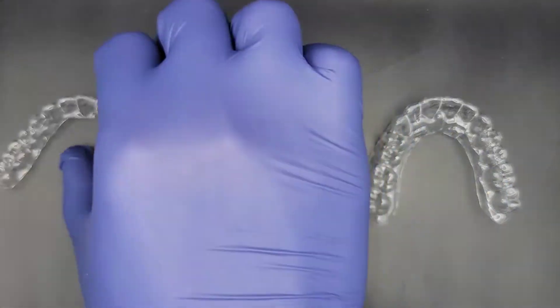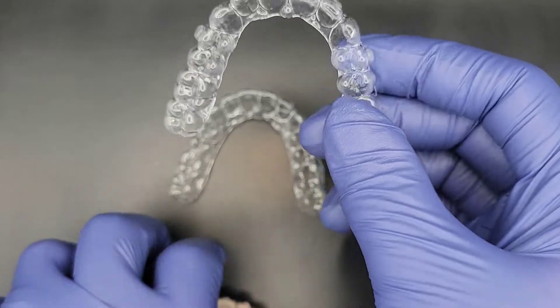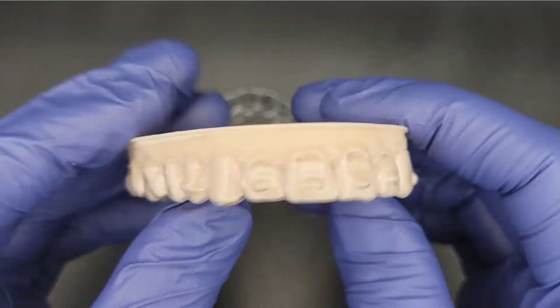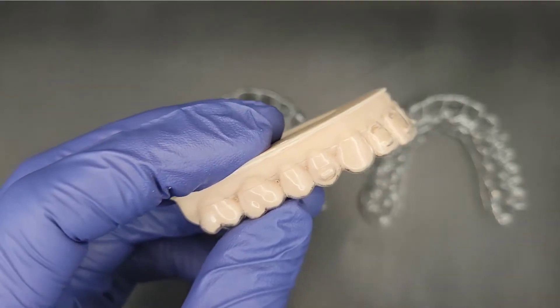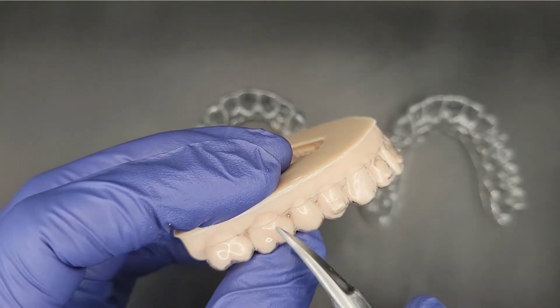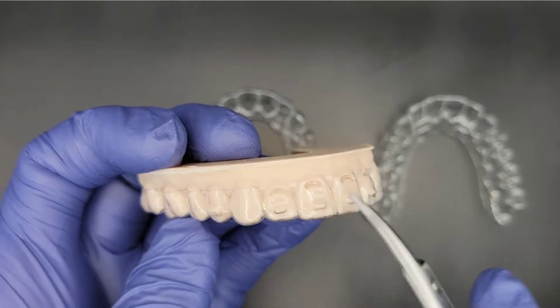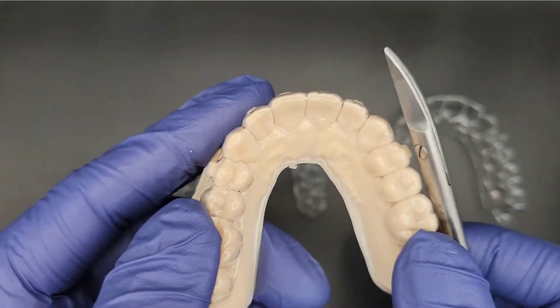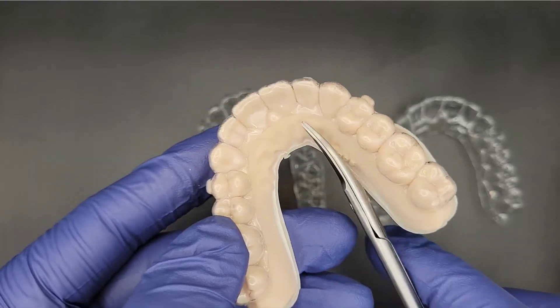Here are some examples of aligners that are cut incorrectly. First, let's look at this one. This one has been cut too short, and as you can see, some of the tooth is exposed above the aligner cut. The cut on the palate is a little high as well.